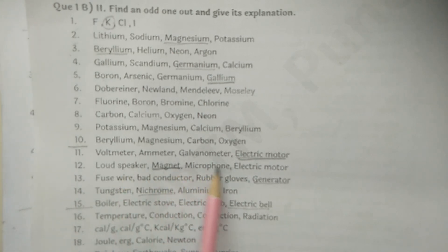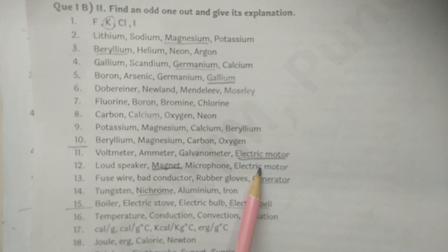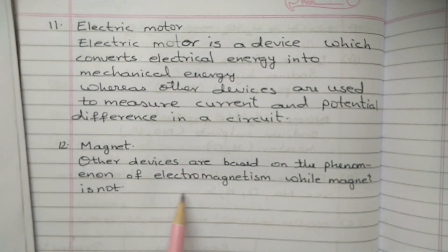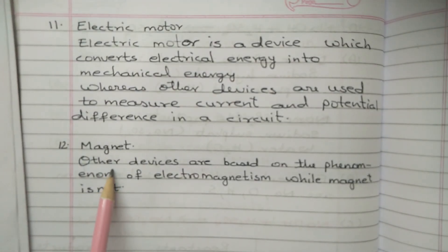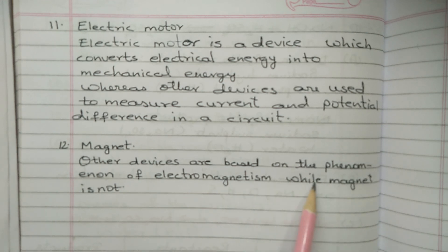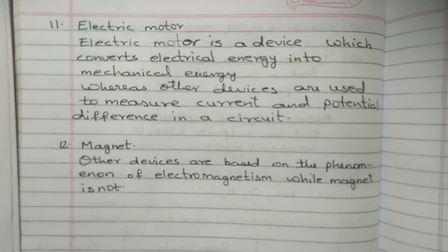Q12: Loudspeaker, magnet, microphone, electric motor - the odd one out is Magnet. Reason: Loudspeaker, microphone, and electric motor are devices which are based on the phenomenon of electromagnetism, whereas magnet is not. Answer to be written: other devices are based on the phenomenon of electromagnetism while magnet is not.